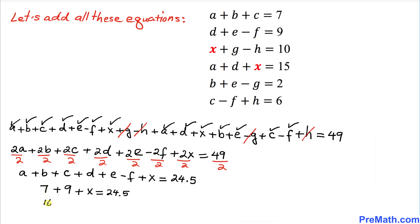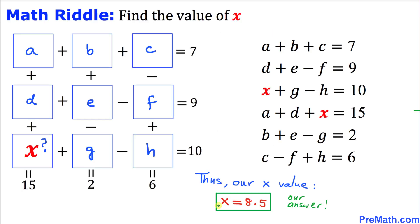Combining the like terms on the left-hand side: 16 plus x equals 24.5. Moving 16 to the other side to isolate x gives x equals 24.5 minus 16, which means x equals 8.5. That is our final answer. Thanks for watching, and please don't forget to subscribe to my channel for more exciting videos. Bye!